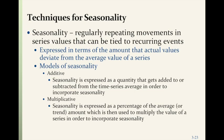Techniques for seasonality apply when there are regularly repeating movements in a series of values that can be tied to recurring events, expressed in terms of the actual values deviated from the value of the series. There are two models: additive and multiplicative. The additive seasonality model expresses a quantity that gets added to or subtracted from the time series average to incorporate seasonality. The multiplicative model expresses seasonality as a percentage of the average or trend amount, which is then used to multiply the value of the series.